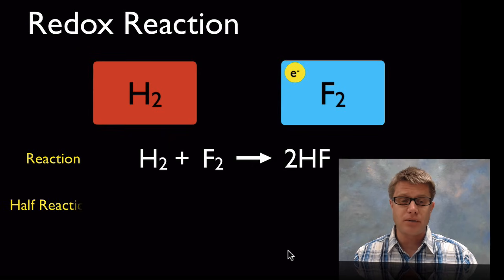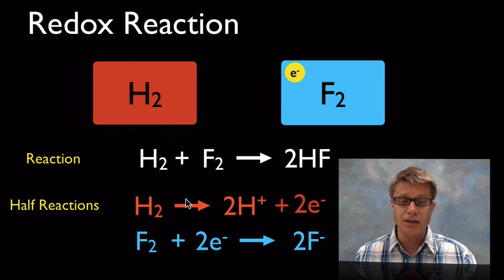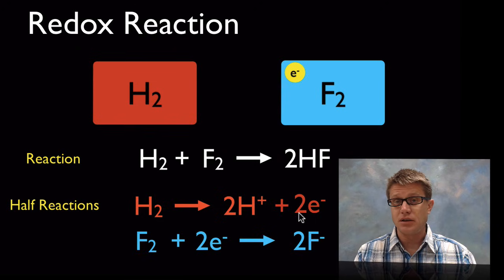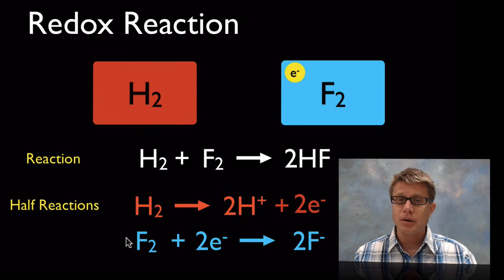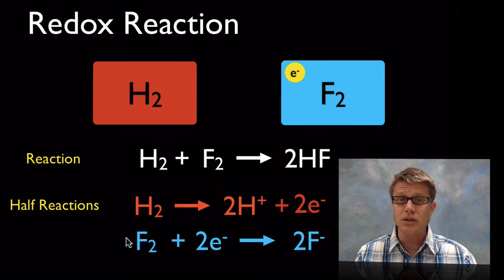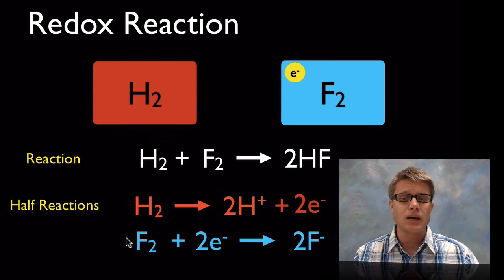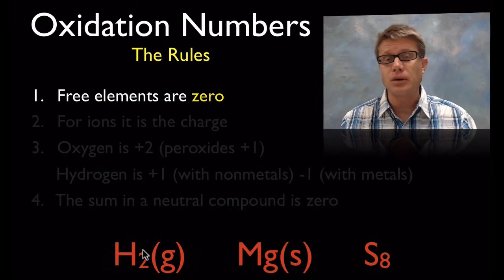We could write this out as half reactions. We've got the hydrogen making hydrogen ions plus the electrons it is losing, and then we have the fluorine which is gaining those electrons. This is the oxidation portion and this is the reduction portion. But how did I decide that hydrogen was losing the electrons and fluorine was gaining them? We use oxidation numbers to figure that out.